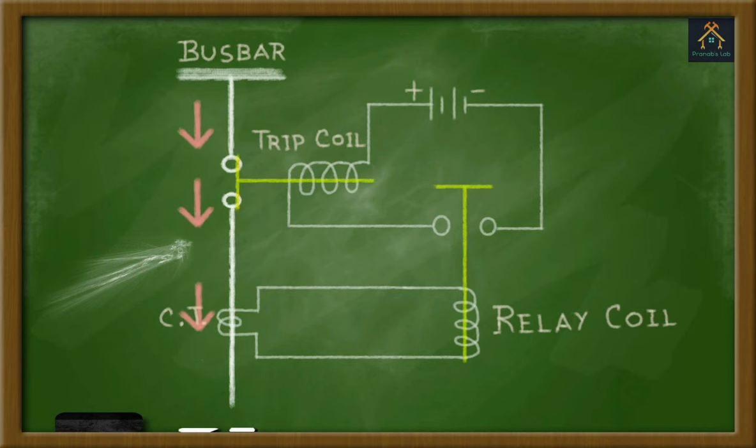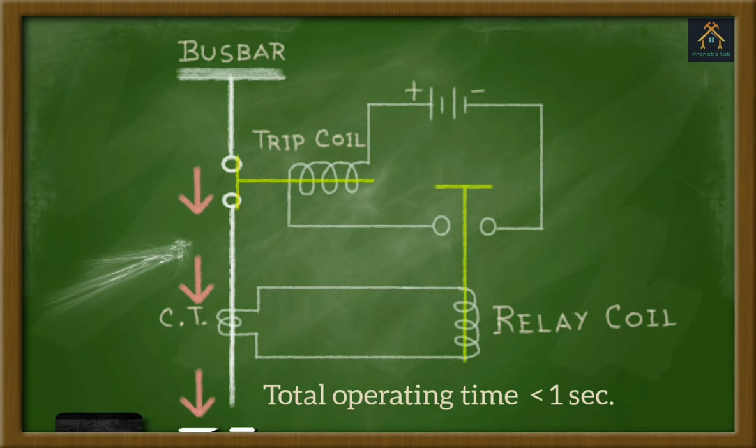Now, you can see the main line is closed and normal current is flowing from the bus bar. From fault sensing by the CT to operation of the circuit breaker, it requires less than one second time for operation of the whole process.